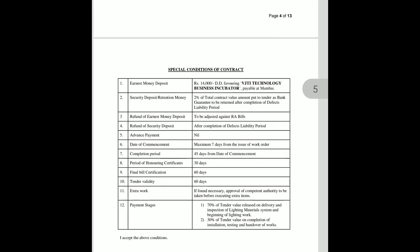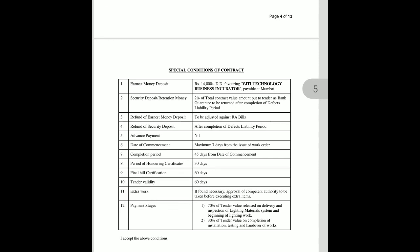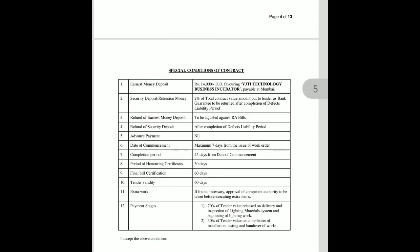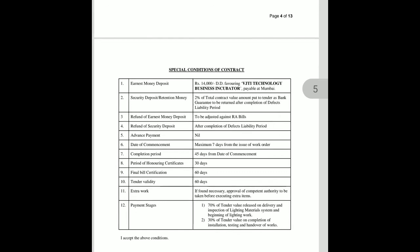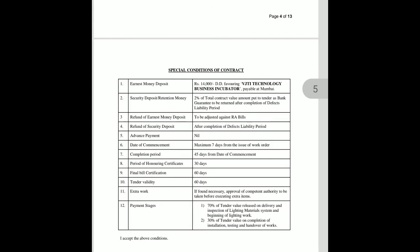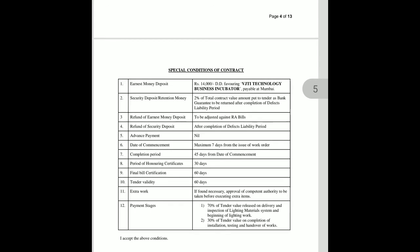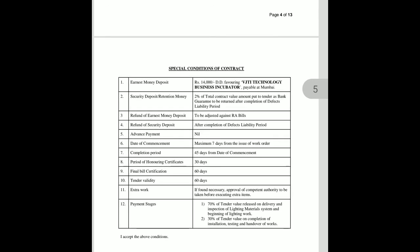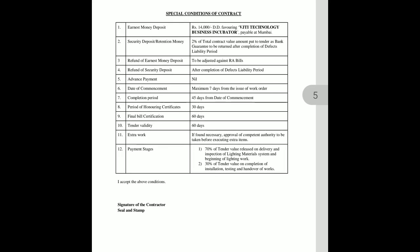These are the general requirements of the owner, along with stamp and seal of the contractor. For the special conditions: the earnest money deposit is 40,000 in DD form, favorable to the VJTI Technology Business Incubator, payable at Mumbai. The security deposit is 2% of the total contract value as a bank guarantee, to be returned after completion of the defect liability period. The EMD is to be adjusted against the RA bill.